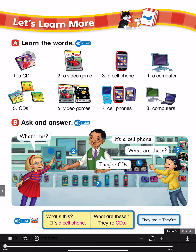Page 26 Drum Track. What's this? It's a cell phone. What are these? They're CDs. What's this? It's a cell phone. What's this? It's a cell phone.